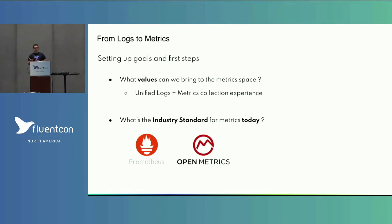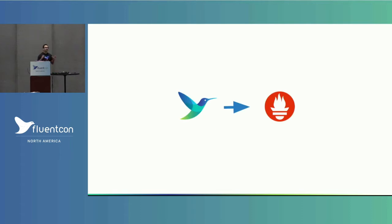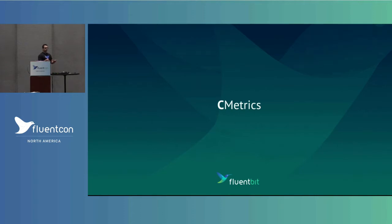We started thinking about what value we could bring to the metric space, because every user — even coming from KubeCon — says, 'I don't want to manage multiple agents, one for metrics and one for logs. Can we have a more unified experience?' So we looked at what the current standard in the industry is: pretty much Prometheus and OpenMetrics. Since we are vendor agnostic, we can align with what the industry is using today and adapt to what the industry uses tomorrow.